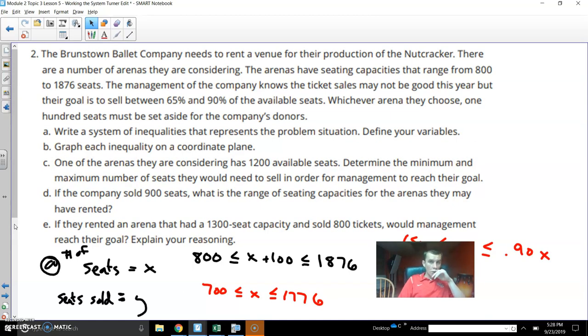Number two, it says that there is a company that wants to rent a place for the Nutcracker. That is a popular ballet, Christmas time. It says their seating capacities range from 800 to 1800. And the management knows that the ticket sales may not be very good. Normally they sell between 65 and 90% of the tickets. So whichever arena they choose, they want a hundred seats to be set aside for the company's donors, the people that made it happen. They want to give them maybe better seats or free seats or something like that.